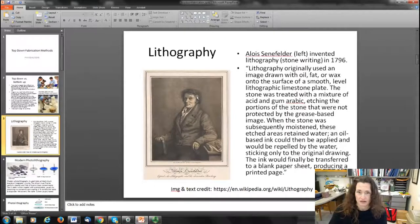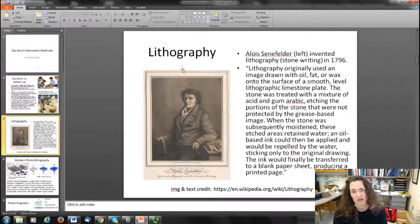Lithography originally used an image drawn with oil, fat, or wax onto the surface of a smooth level lithographic limestone plate. The stone was then treated with a mixture of acid and gum arabic, which etched the portions of the stone that were not protected by the grease-based image.